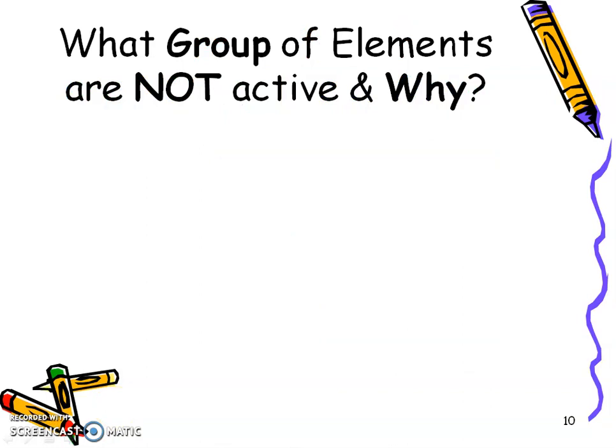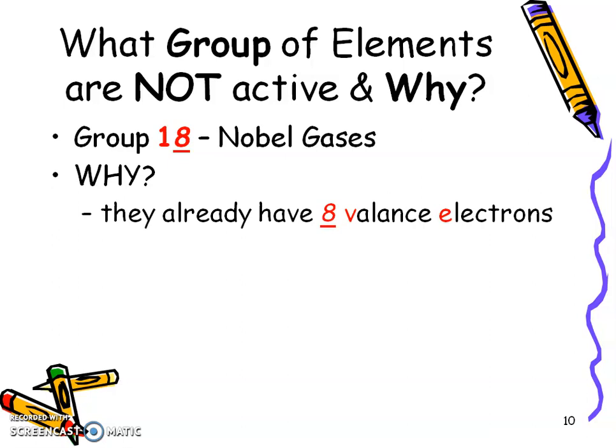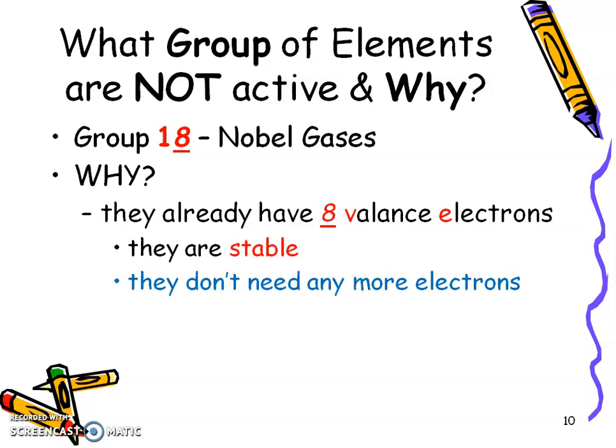Group 18, the noble gases, are not active at all, because they already have eight valence electrons and are stable. The only exception is Xenon bonding with Fluorine — and that's only because Fluorine is such a bully. Otherwise, noble gases don't need any more electrons.